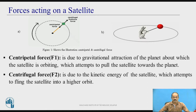Let us look at the forces acting on a satellite using this diagram. At the centre you can find the earth, and the satellite is revolving in a circular orbit. The forces acting on the satellite are two: one is towards the earth, called the centripetal force, and one is going out of the earth, which is the force trying to escape the orbit, called the centrifugal force.